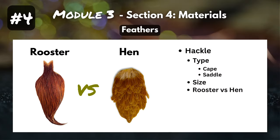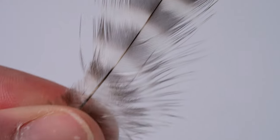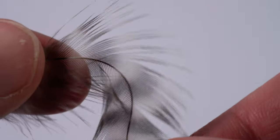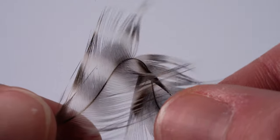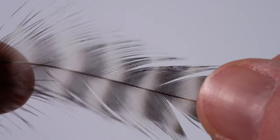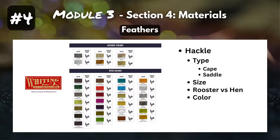We do need to distinguish between rooster hackle and hen hackle. Hen feathers are soft and webby, making them absolutely perfect for soft hackle wet flies or nymphs. Hackle can be found in a wide variety of colors, both natural and dyed. Some of the most common are grizzly, brown, cream, light, medium, and dark dun.